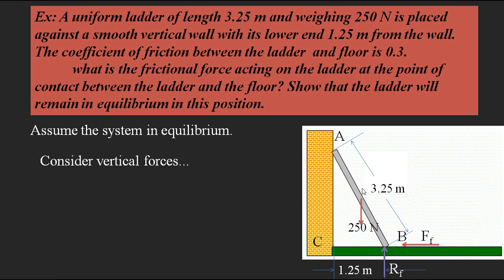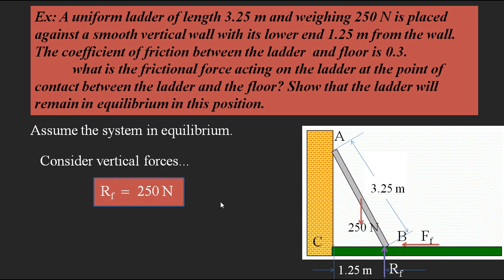We assume the system is initially in equilibrium and then verify it. Considering vertical forces for equilibrium, the sum of vertical forces equals zero. Rf acts upward and the weight 250 N acts downward — these are the only two vertical forces. Therefore, Rf equals 250 newtons.